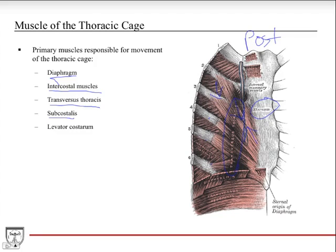The subcostalis muscles go on the inner surfaces of the rib from one rib to the next. Sometimes they just go one rib down; sometimes they skip a rib and go down like from the third to the fifth. These muscles don't serve too much function, but they like to get tagged on anatomy practicals, so be aware of them, especially when you take that chest plate or rib plate with the sternum off to do your dissection.